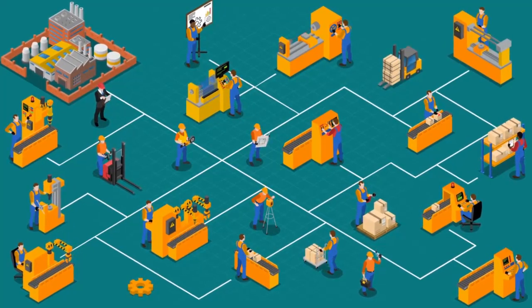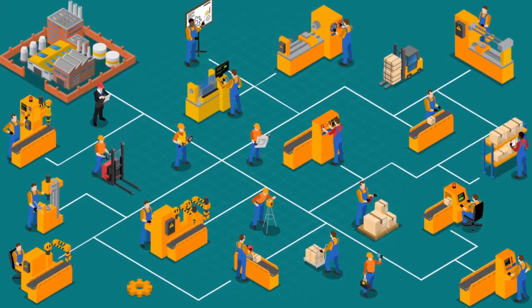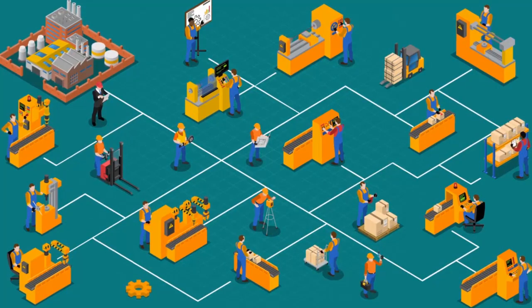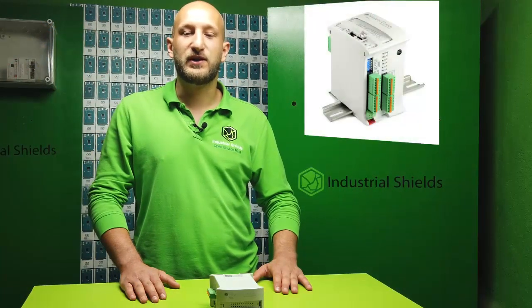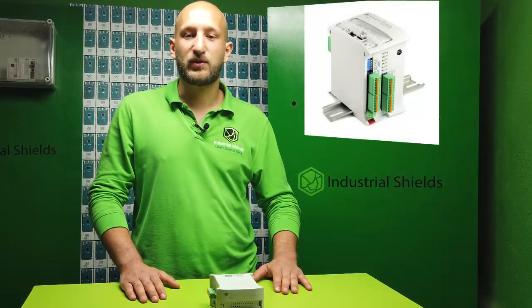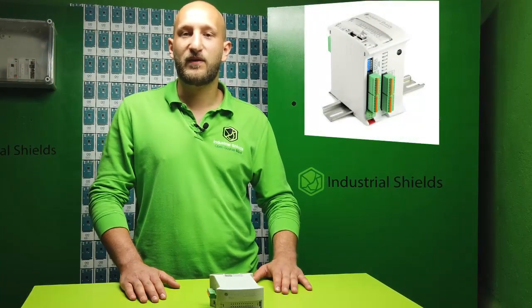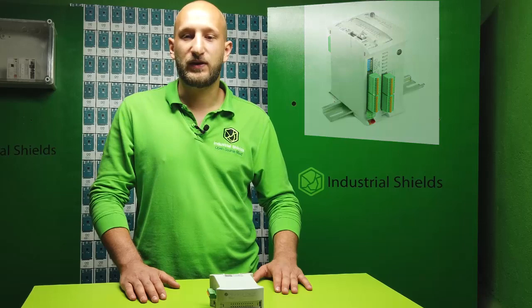To create the automated system we are going to use the latest technology from Industrial Shields in terms of data acquisition and communication. For this example we have chosen an Mduino 21 Plus with WiFi and Ethernet.